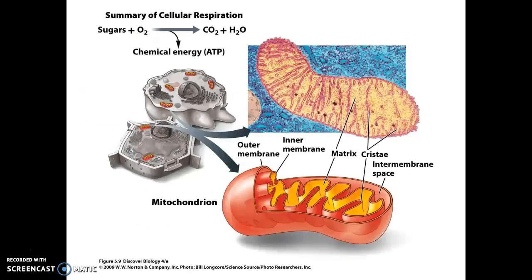When we look at what these organelles look like, they have two membranes: an outer membrane and an inner membrane. Surprisingly, the inner membrane is actually larger than the outer membrane. So you'll see a lot of these bends and alleys and internal structures within the mitochondria, made by that folded inner membrane. These organelles are found in all eukaryotic cells.